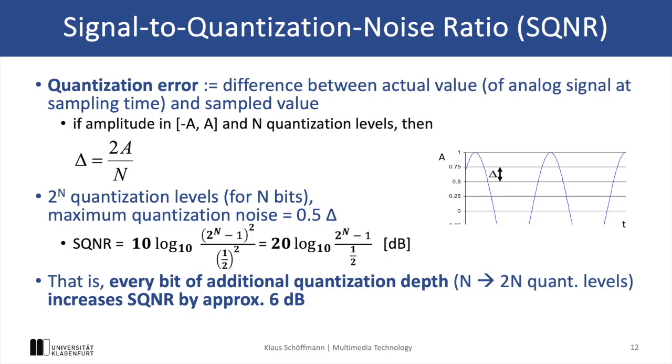Another important concept is the signal-to-quantization noise ratio, or SQNR, which measures the efficiency of quantization in digitized signals, and quantifies the ratio between the signal power and the power of the quantization noise that is introduced during the digitization process.